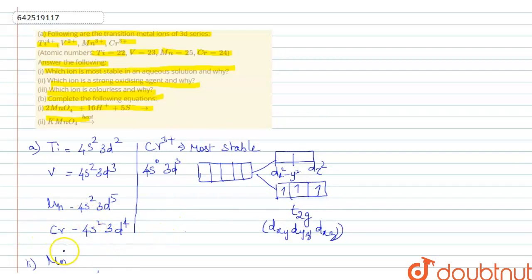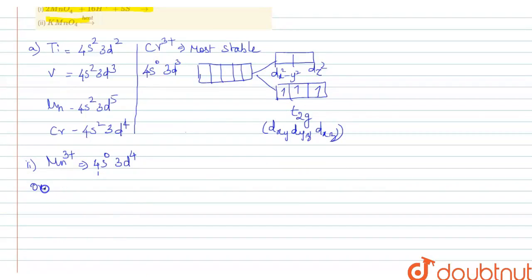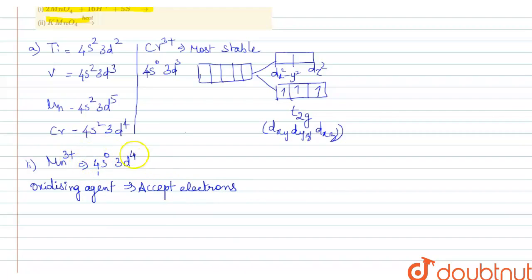Next, Mn3+: its electronic configuration is 4s0, 3d4. It requires only one more electron to achieve the 3d5 half-filled configuration, which is the most stable. An oxidizing agent accepts electrons. So Mn3+ has a strong tendency to accept electrons to attain the stable 3d5 configuration. Therefore, Mn3+ is the strongest oxidizing agent.